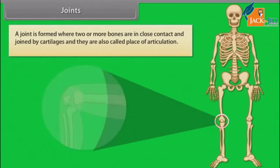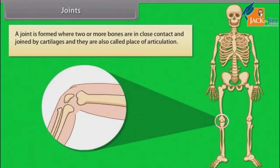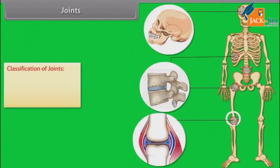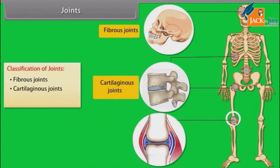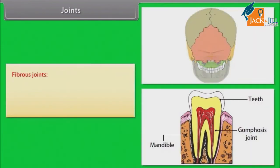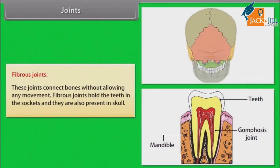A joint is formed where two or more bones are in close contact and joined by cartilages; they are also called places of articulation. Joints are classified as fibrous joints, cartilaginous joints, and synovial joints. Fibrous joints connect bones without allowing any movement.